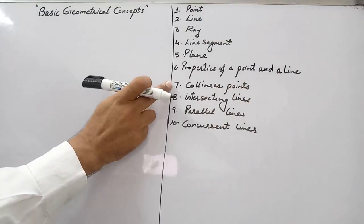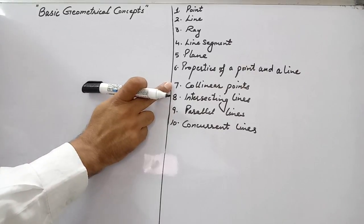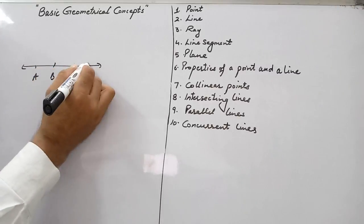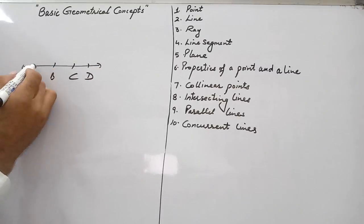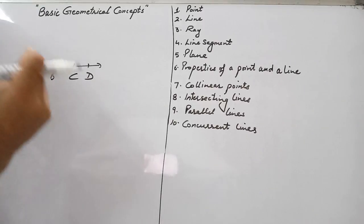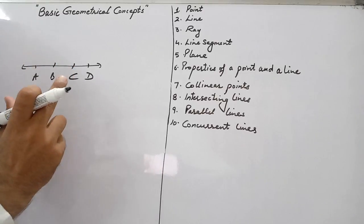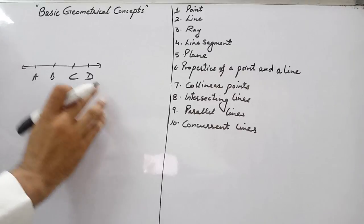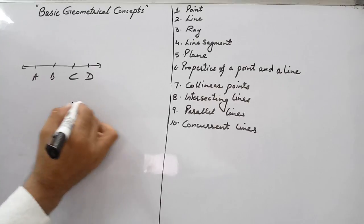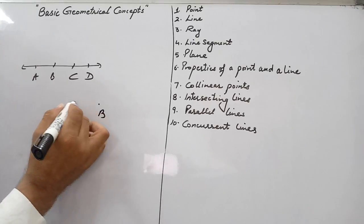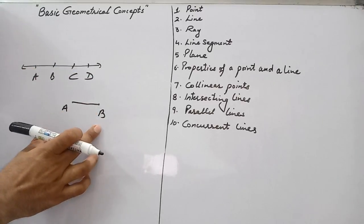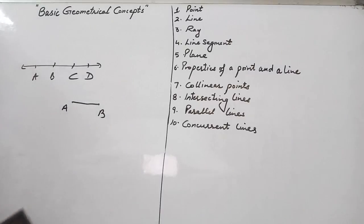Next is collinear points. Collinear points are those points which are on the same line. Suppose we have three points A, B, C — these all come on the same line, so these are called collinear points. Three or more points in a plane which lie on the same line are called collinear points. We take at least three points because any two points are always on the same line.